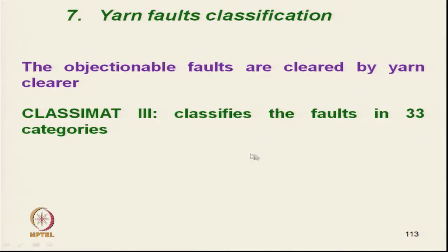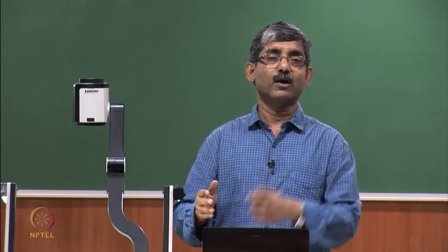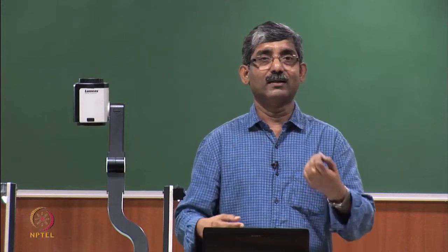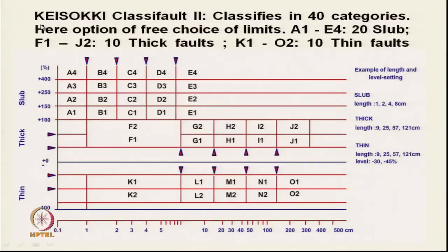Objectionable faults are cleared by a yarn clearer during winding, where we can set which fault categories to remove. The Classimate 3 model classifies faults into 33 categories instead of 23. Another tester, the Kyosuke Classifault, classifies into 40 different categories. The number of categories is simply a software matter — the basic sensing principle remains the same.